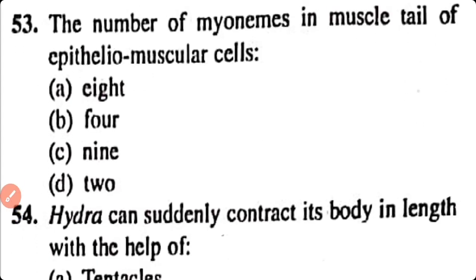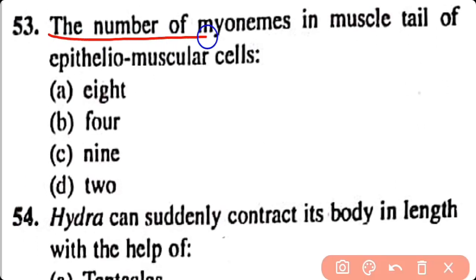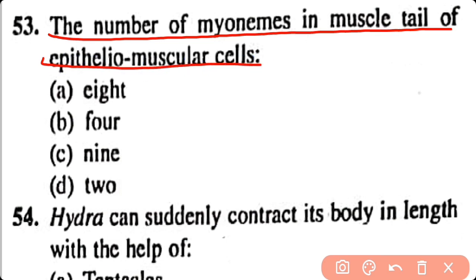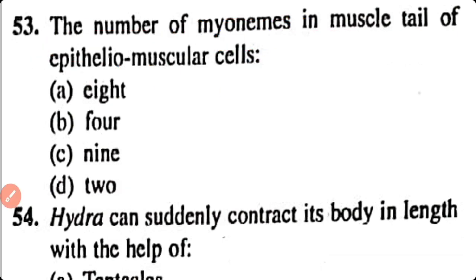Question number 53. The number of myonemes in the muscle tail of epithelial muscular cells are: 8, 4, 9, 2. Option D. Two myonemes are present in the muscle tail of epithelial muscular cells.